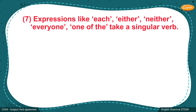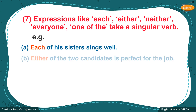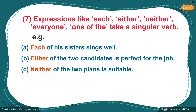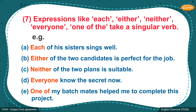Rule 7: Expressions like 'each', 'either', 'neither', 'everyone', and 'one of the' always take a singular verb. Example A: 'Each of his sisters sings well.' Example B: 'Either of the two candidates is perfect for the job.' Example C: 'Neither of the two plans is suitable.' Example D: 'Everyone knows the secret now.' Example E: 'One of my batch mates helped me to complete this project.'